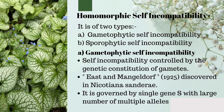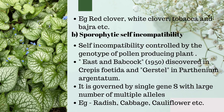Gametophytic self-incompatibility is controlled by the genetic constitution of the gametes. East and Mangelsdorf discovered it in Nicotiana sanderae. It is governed by a single gene S with a large number of multiple alleles. Examples include red clover, white clover, tobacco, and Petunia.